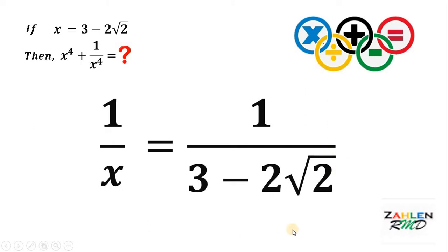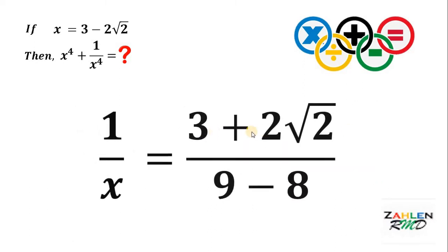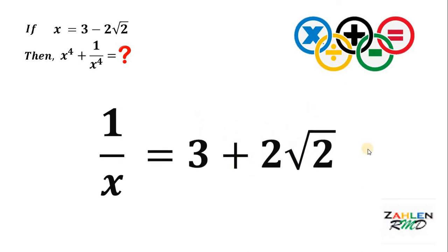Now, simplify the right-hand side by rationalizing the denominator. To do that, let's multiply by its conjugate. The conjugate of 3 minus 2 square root of 2 is 3 plus 2 square root of 2. So, we multiply by 3 plus 2 square root of 2 over 3 plus 2 square root of 2. The numerator gives us 3 plus 2 square root of 2, and the denominator gives us 3 squared minus 2 times square root of 2 quantity squared, which equals 9 minus 8. And 9 minus 8 gives us 1.